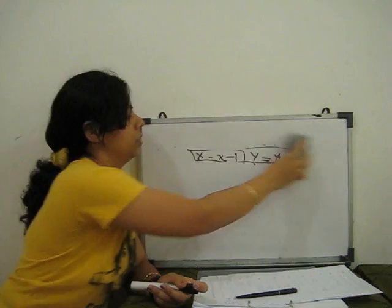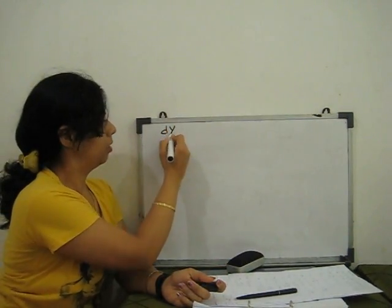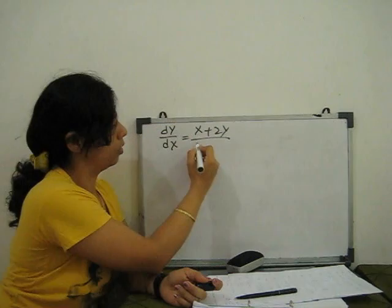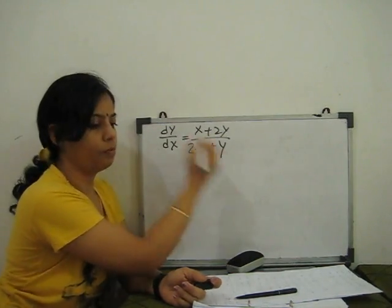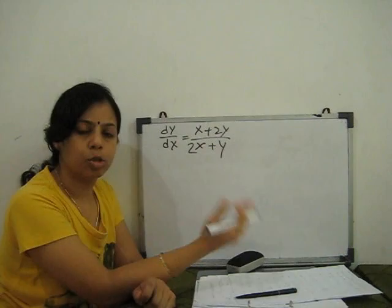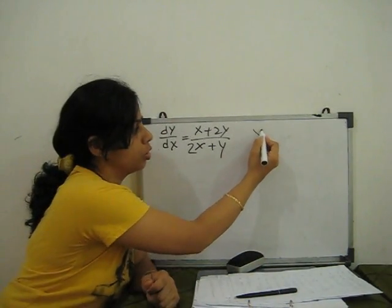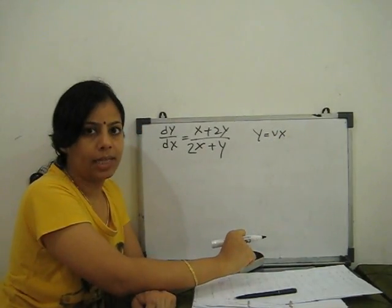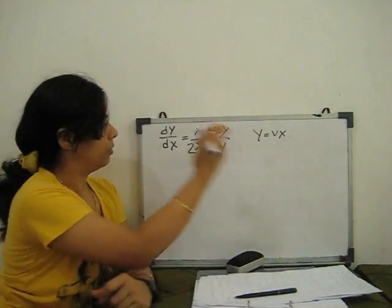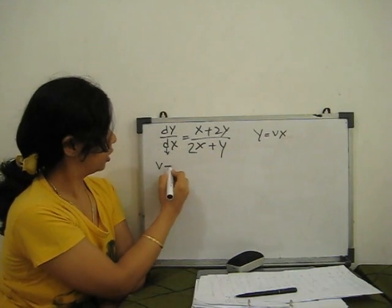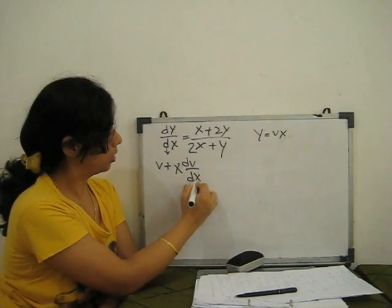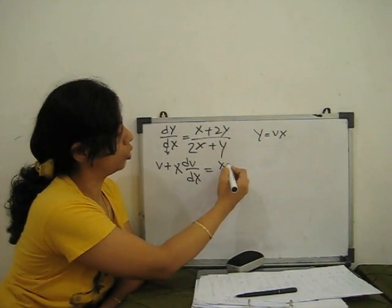Our homogeneous equation is now dY/dX = (X + 2Y) / (2X + Y). Now it is homogeneous, so we apply the standard solution method: substitute Y = vX, so dY/dX = v + X·dv/dX. You can see how this comes in my previous video. Substituting: v + X·dv/dX = (X + 2vX) / (2X + vX).